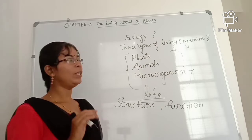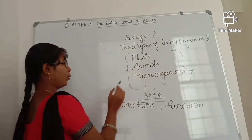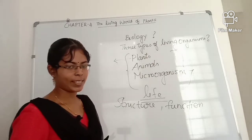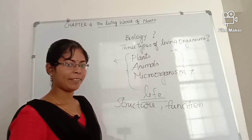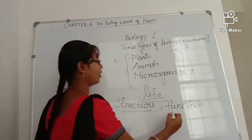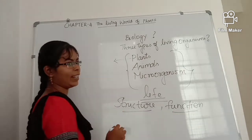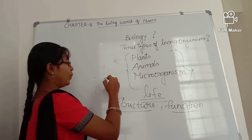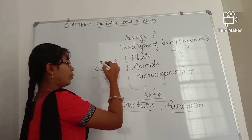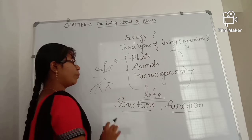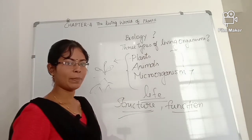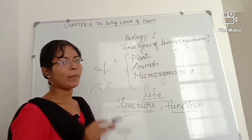Plant is a living organism. Plant has life. Plant structure and function — what does a plant look like? It has leaf, stem, flower, bud, and root. If you study that structure and function, it's called biology.